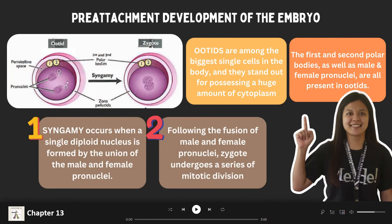Now, let's proceed to the pre-attachment development of the embryo. Presence of male and female pronuclei within the cytoplasm of the oocyte characterizes a developmental stage of a newly fertilized oocyte. This cell is called the ootid. The ootid is an egg that results from the second meiotic division of an oocyte and develops into a mature egg. Ootids are among the biggest cells in the body, and they stand out for possessing a huge amount of cytoplasm compared to their nuclear volume.